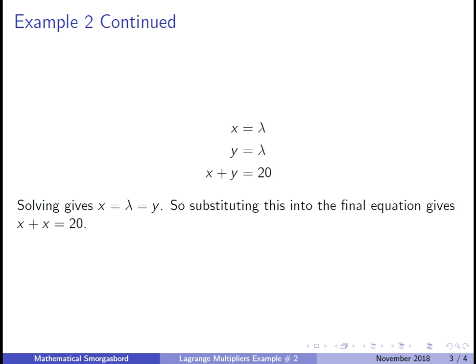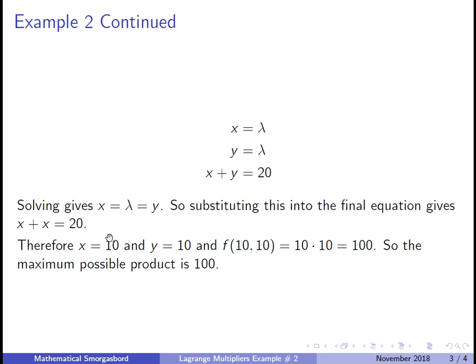All right, so we have our three equations. Now one way to solve this would be to just notice that x equals y, since they're both equal to lambda. So then you substitute this in and we have x plus x equals 20. So then x equals 10 and y equals 10. And then you plug this into our function f, which is just the product. So you get that the product is 100.